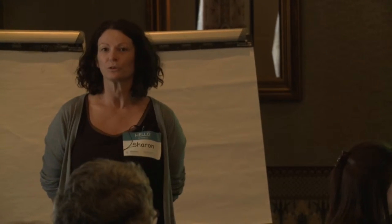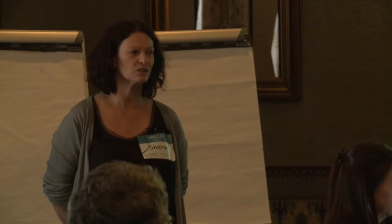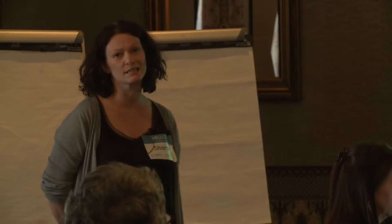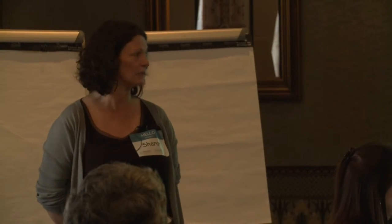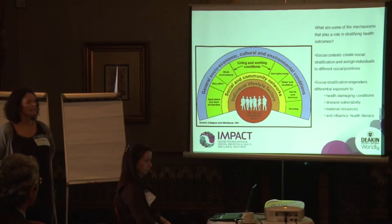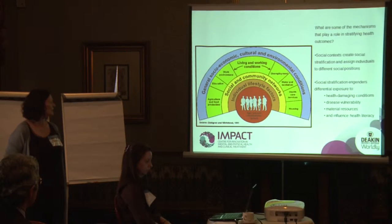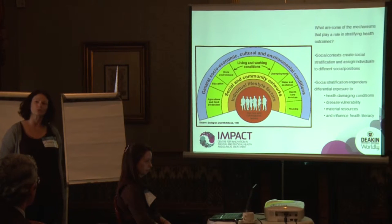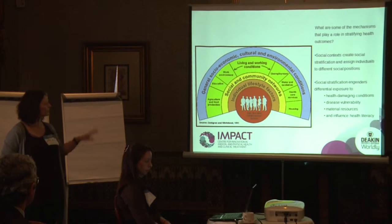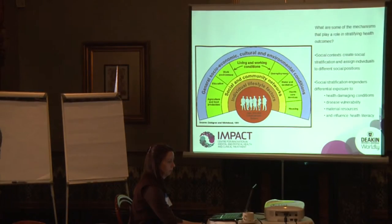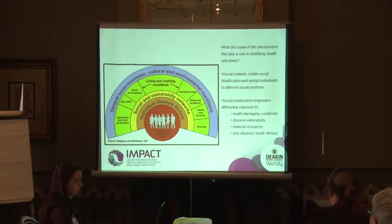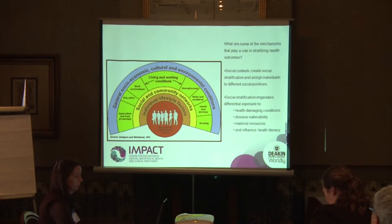I'm feeling privileged to follow Helen, who so eloquently described what the social gradient of health is. I want to briefly touch on this model from Dahlgren and Whitehead, also commonly referred to as the social rainbow. It gives us an idea of the population at the centre, surrounded by overarching factors: individual, social, infrastructure, and policy — all of which impact on the population.